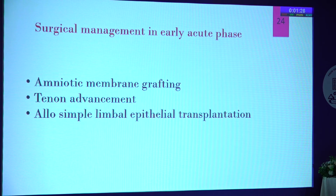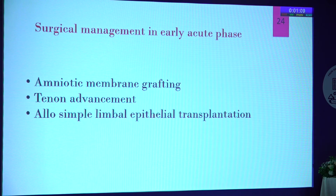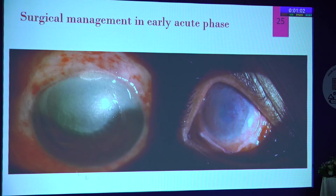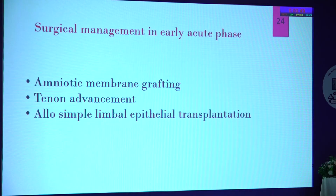The surgical management in the early acute phase traditionally involves amniotic membrane graft and Tenon's advancement — putting a biological cover and using trophic factors from the amniotic membrane, while bringing Tenon's forward to introduce vascularity in the damaged area to enhance healing. For example, in a completely ischemic area, scar tissue was removed, the surface cleaned, Tenon's brought forward, and amniotic membrane with BCL placed. Recently, the SN group proposed allogenic simple limbal epithelial transplantation (allo-SLET) in the early acute phase itself, believing that for Grade 4 or worse injuries without a limbal stem cell reservoir, amniotic membrane graft or Tenon's advancement alone may be insufficient.